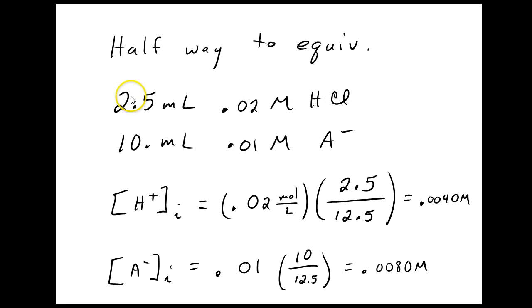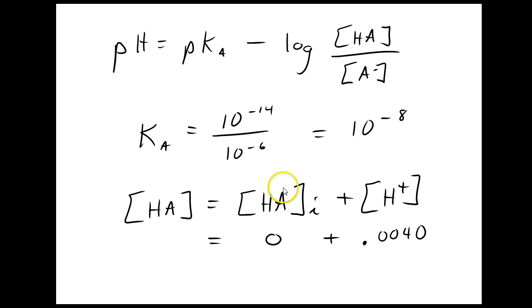Halfway to the equivalence point, we're only going to have 2.5 milliliters of HCl. That's halfway to 5 milliliters. And I'm going to do my usual calculations for diluting each of the chemicals. And I'm going to get 0.004 molar for the H plus and 0.008 molar for the A minus, which makes sense because we're halfway to the equivalence. I should have half as much H plus as A minus. And then I'm going to have to adjust these to use the Henderson-Hasselbalch equation because this is a buffer. I've got excess A minus and H plus.